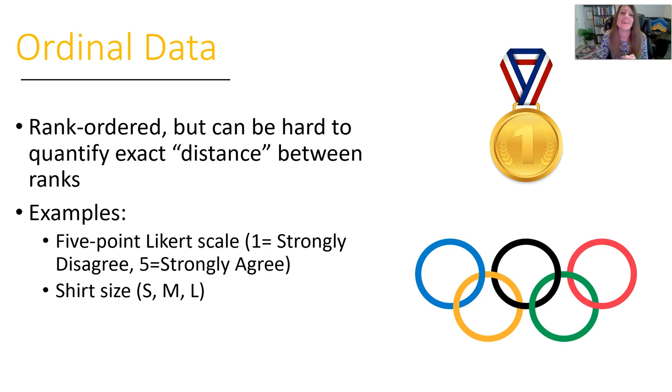The way I remember this is I think of the O in ordinal as looking kind of like a gold medal or like the rings for the Olympics. First, second, third place would be an example of ordinal data. So ordinal order - think of the O and the gold medal or the Olympic rings as first, second, third place.